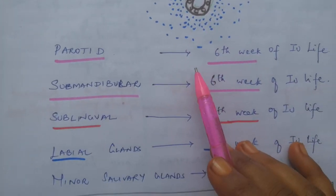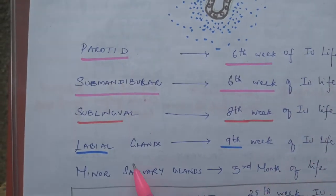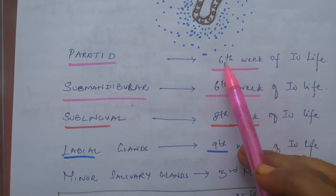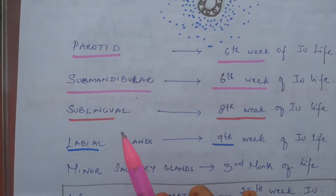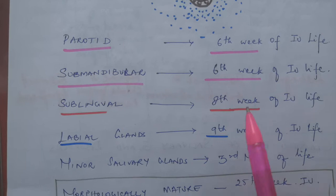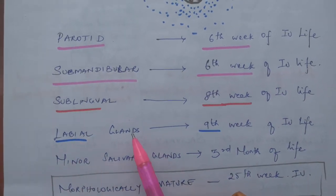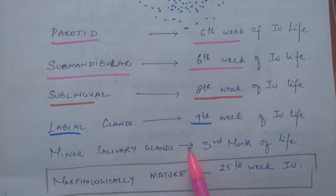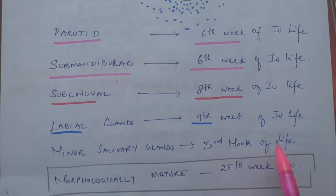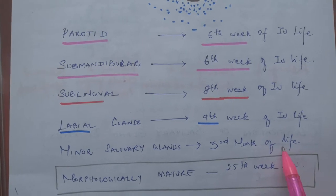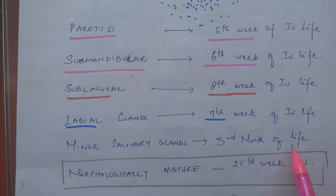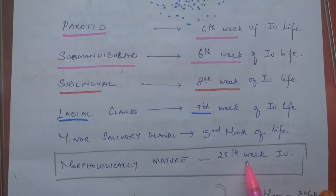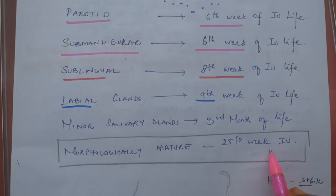Now let's see the timings at which these glands develop. The parotid and submandibular start at the 6th week of intrauterine life. The sublingual develops in the 8th week, and the labial glands in the 9th week of intrauterine life. Minor salivary glands develop in the 3rd month of life — after birth, not intrauterine. Morphologically, all these glands mature at the 25th week of intrauterine life.